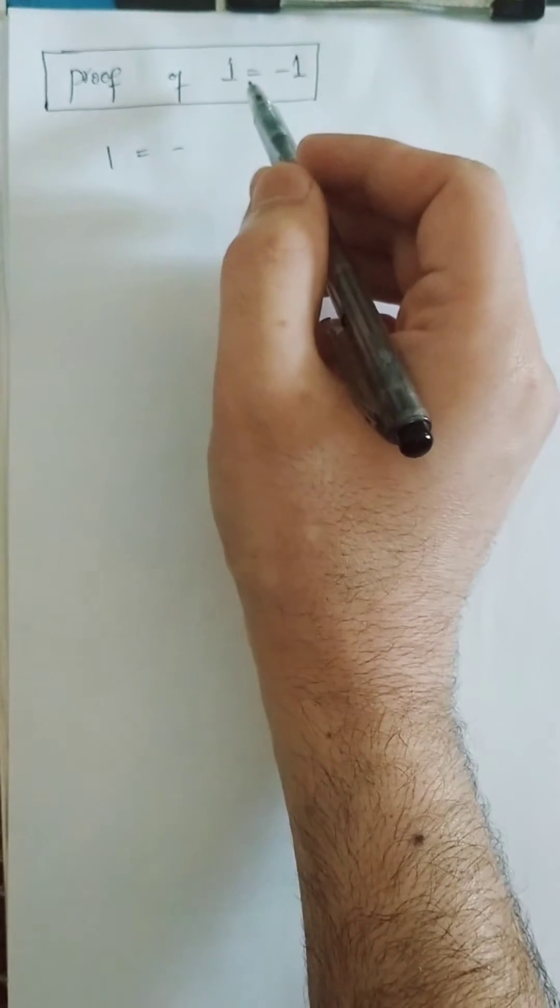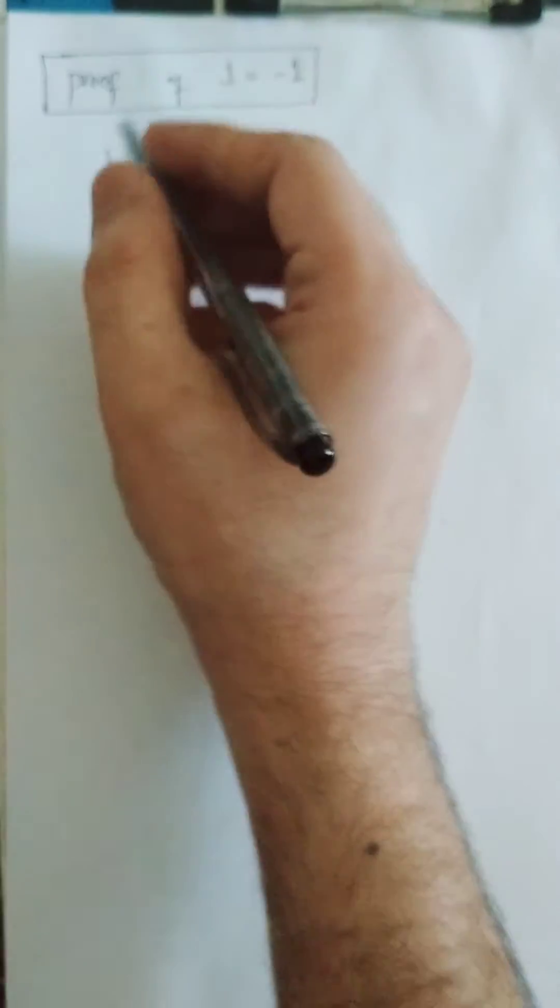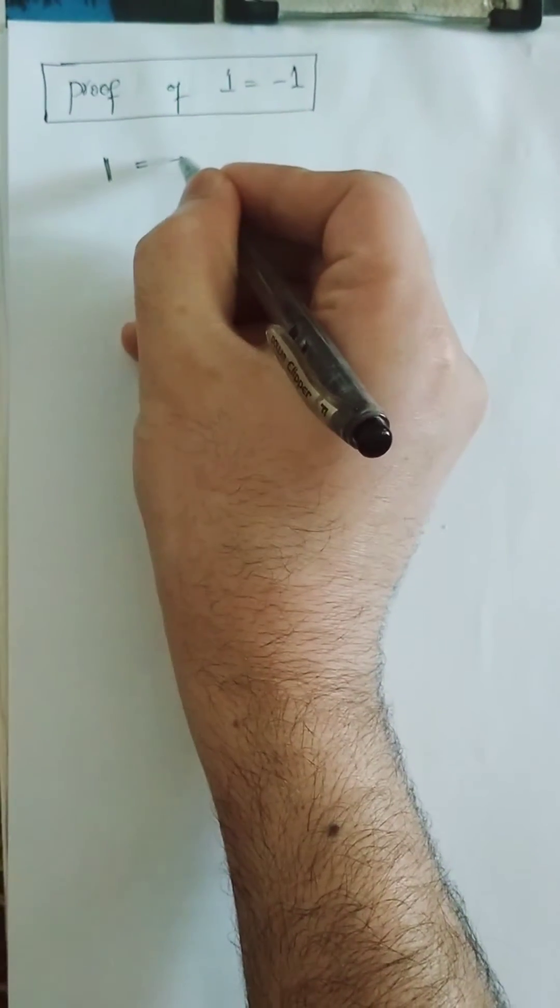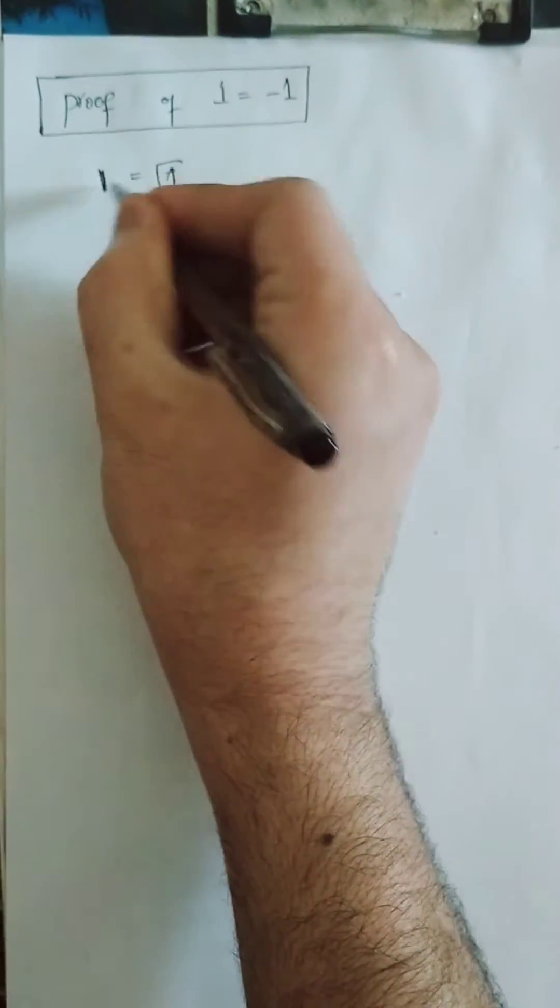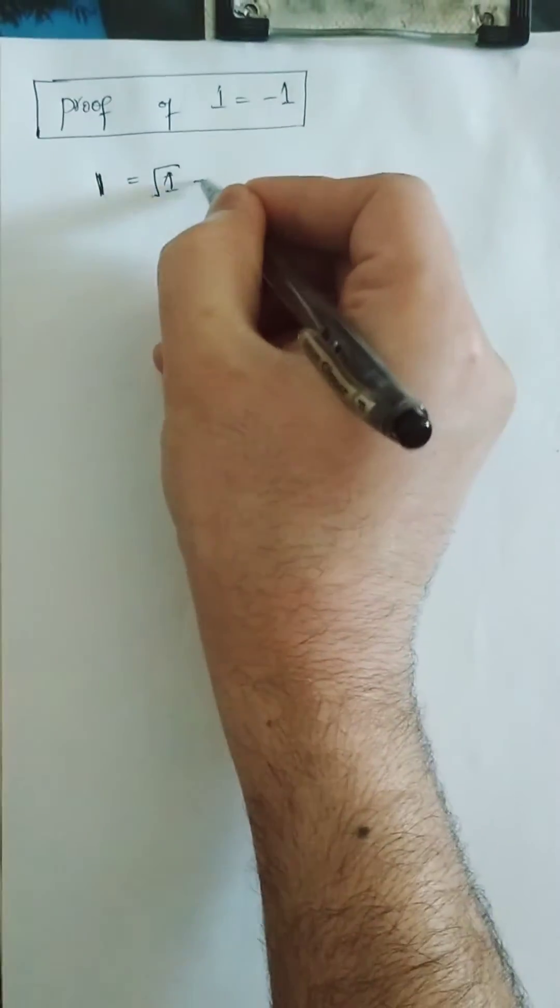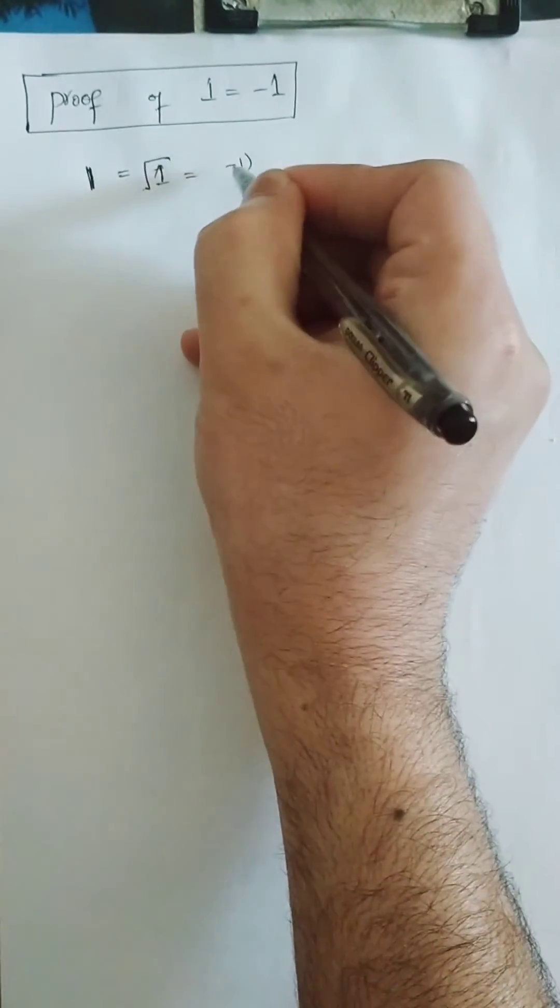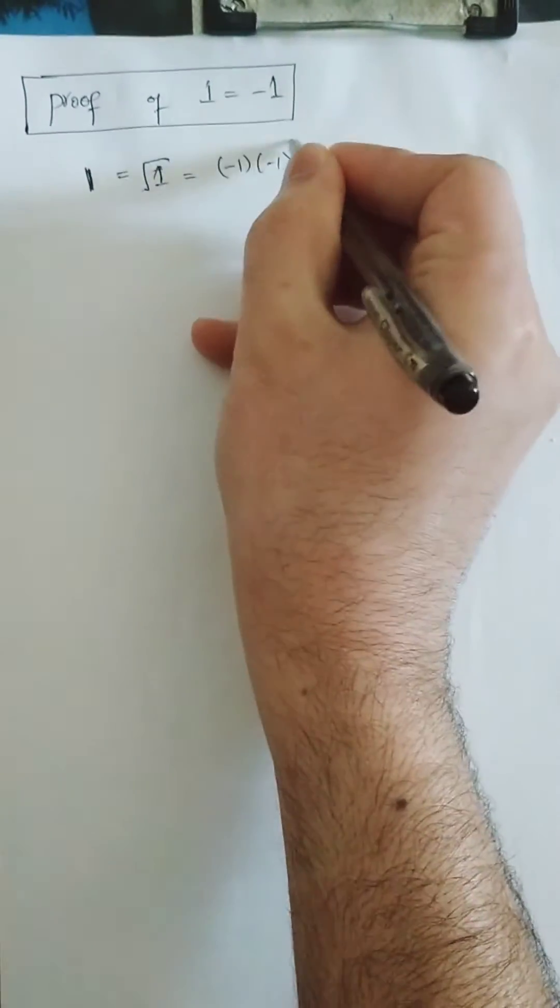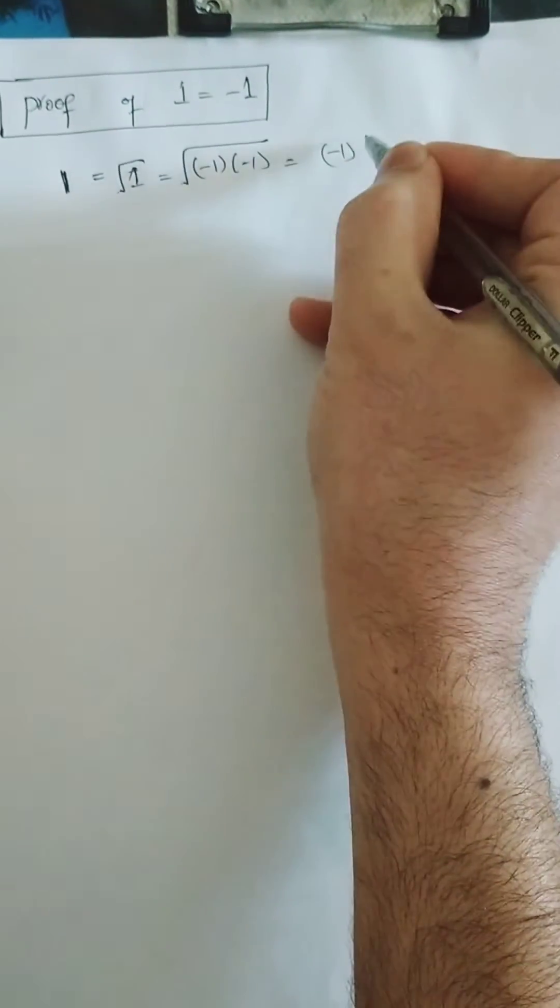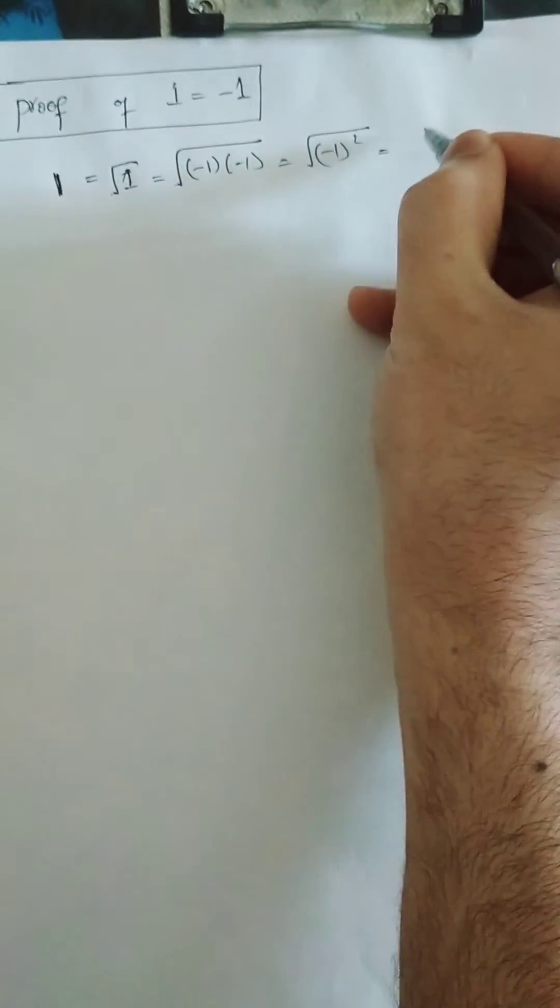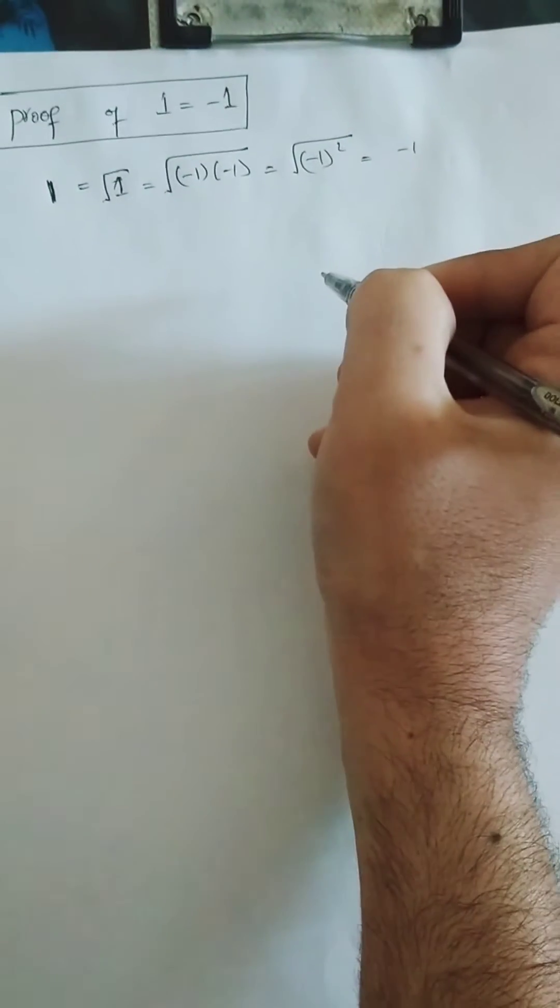And I am going to prove these two numbers are equal. So let us consider 1 is equal to under root 1. I wrote 1 as under root 1, and under root 1 I'll write inside as minus 1 into minus 1. And minus minus becomes whole square, and square and under root cancel, so it equals minus 1.